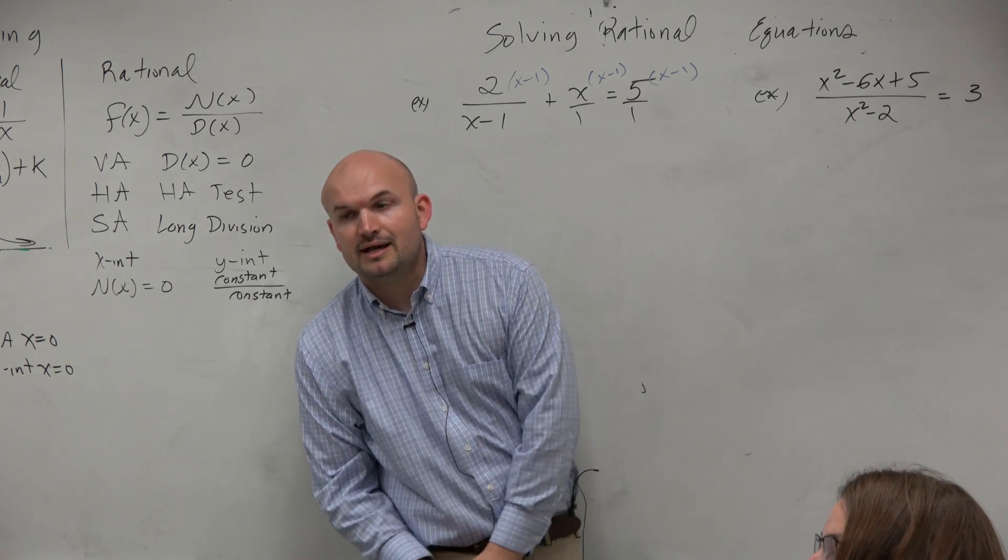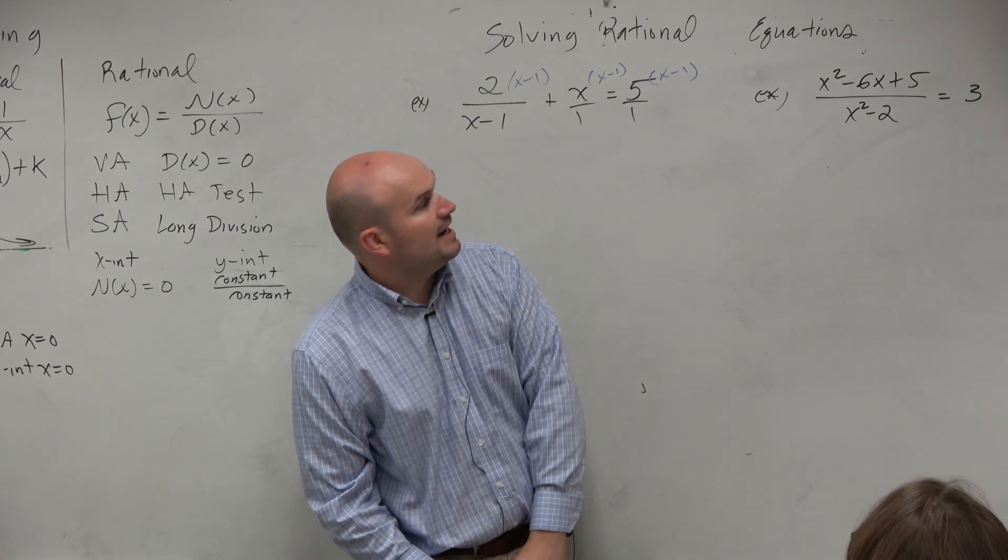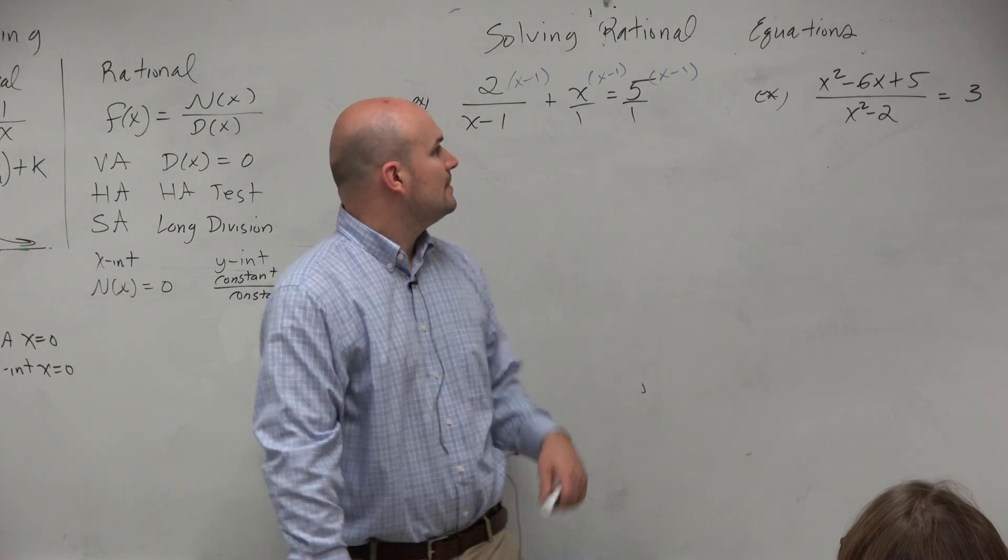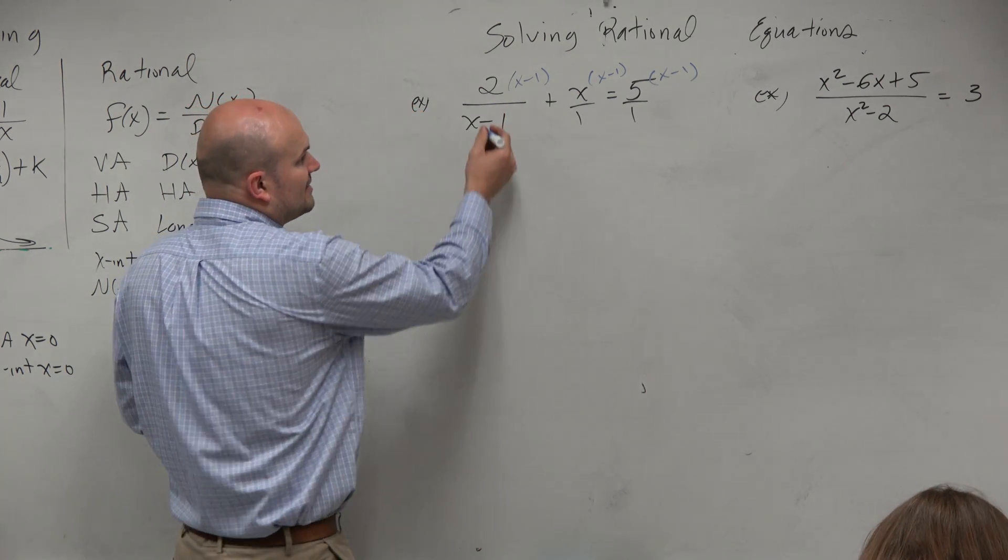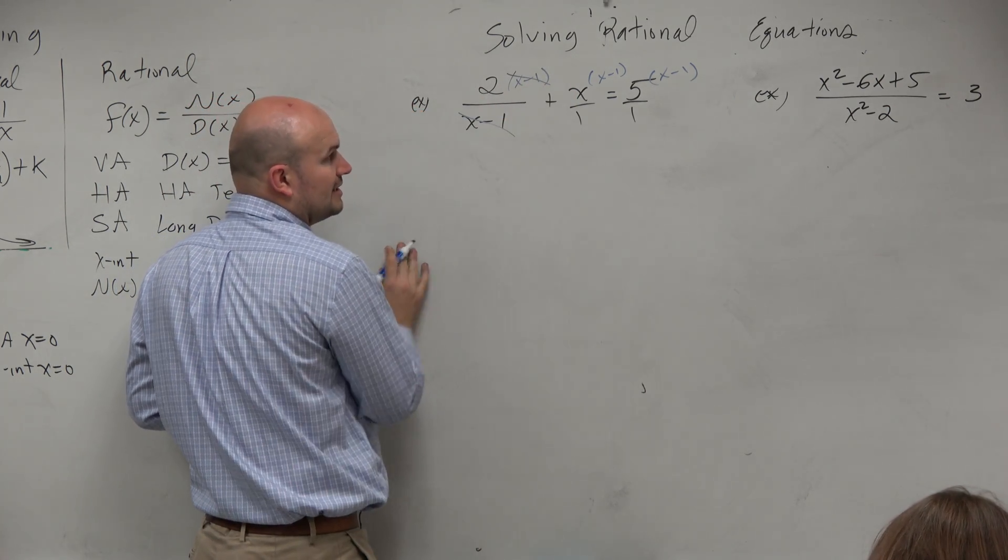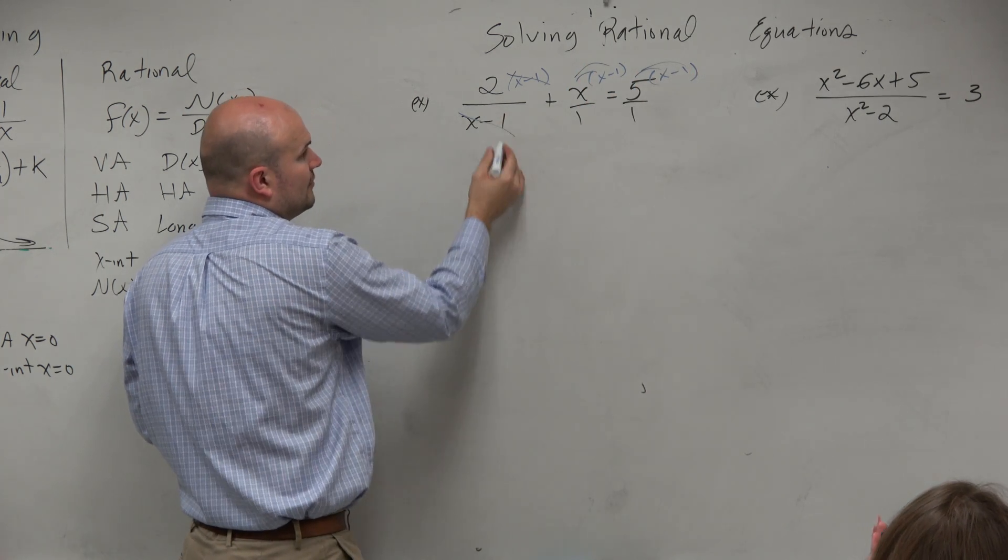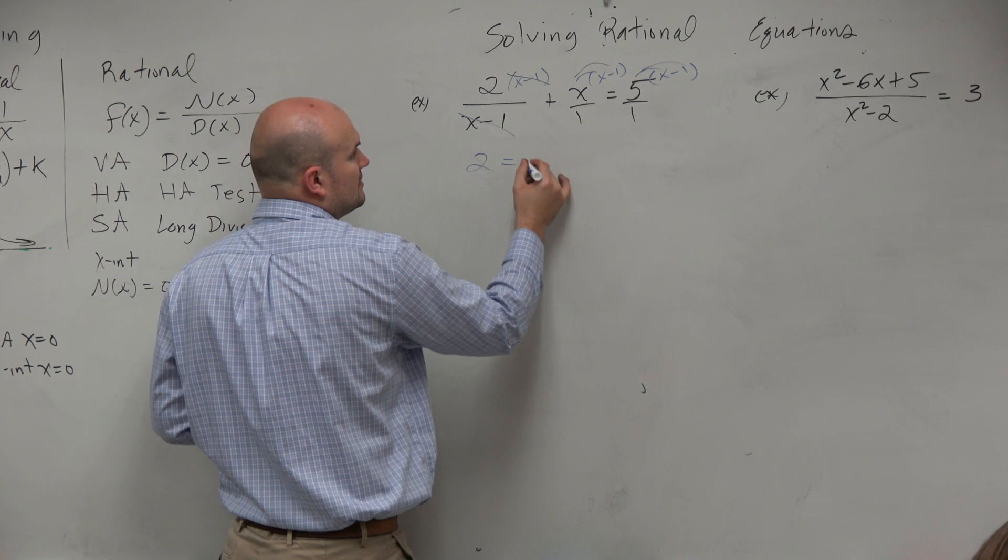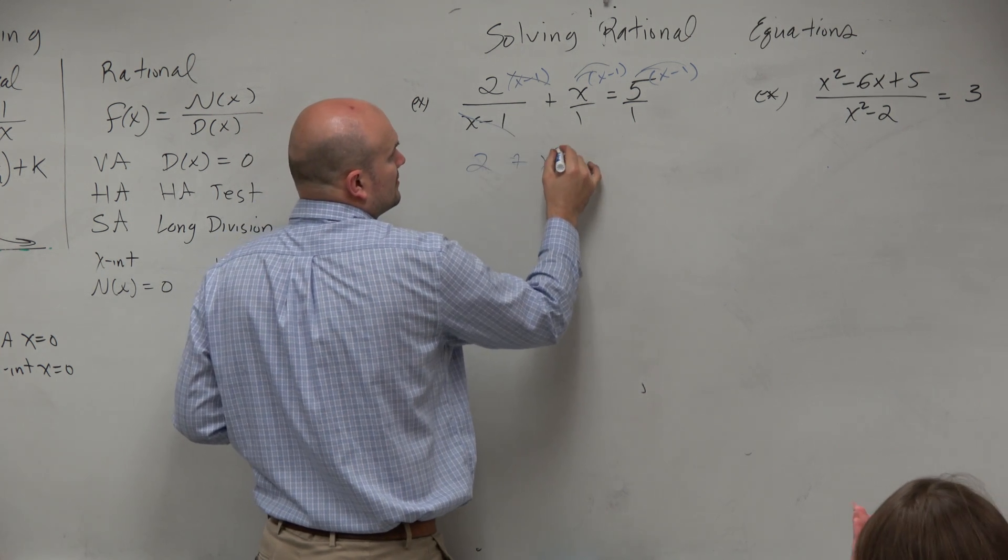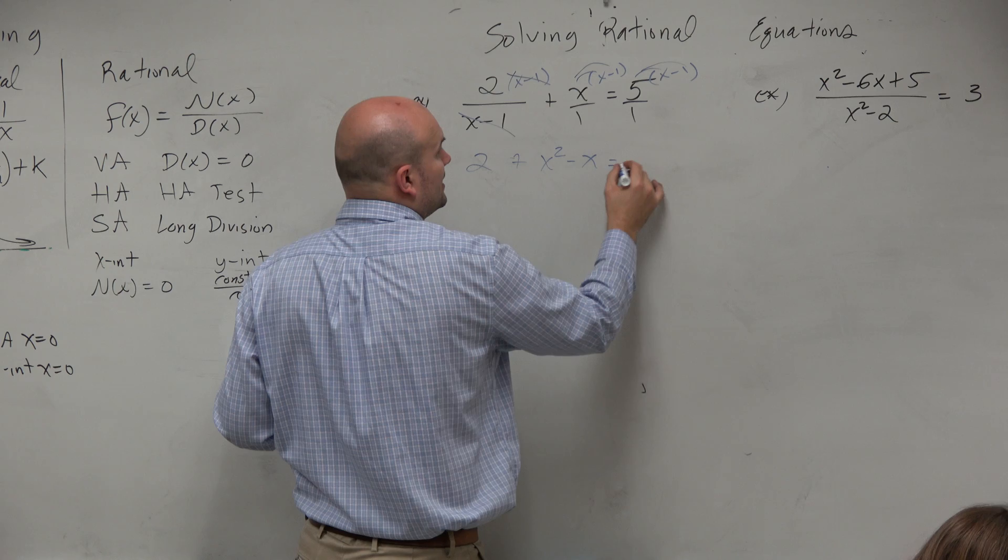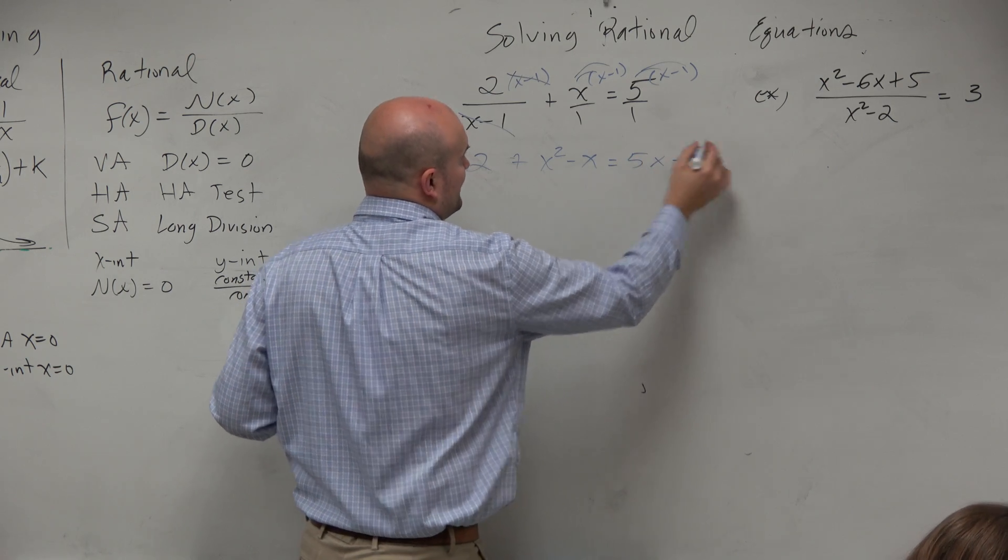So now we're going to go ahead and multiply the x times x minus 1. Make sure, again, this is going to divide out. Here, just make sure you guys are applying this distributive property. So therefore, we're left with 2 equals - I'm sorry, 2 plus x squared minus x equals 5x minus 5.